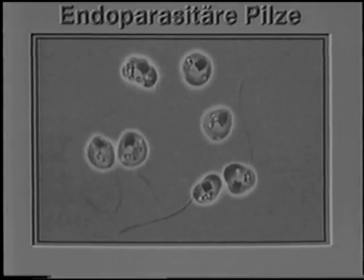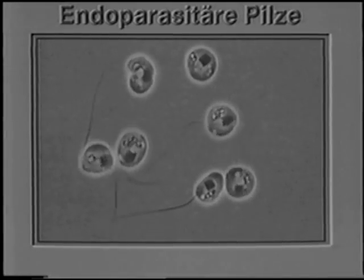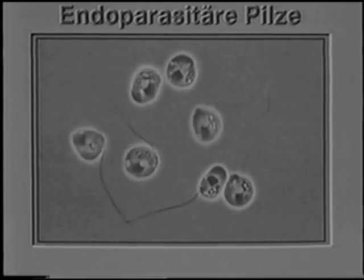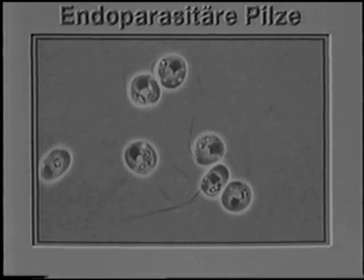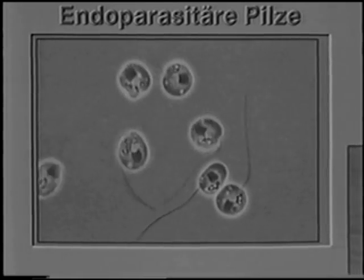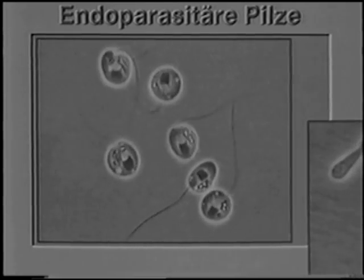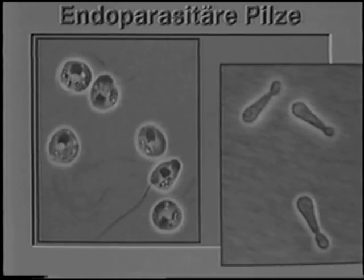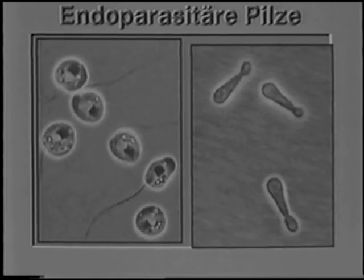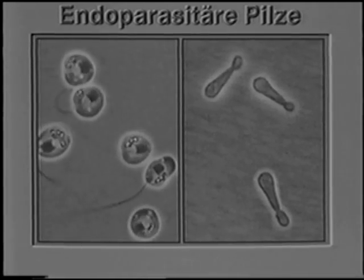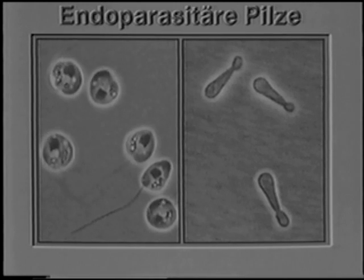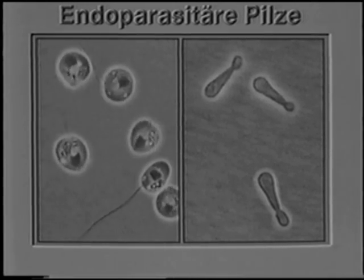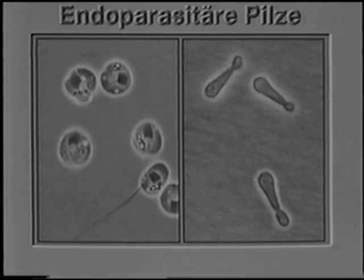The nematophagous fungi capture nematodes either with special mycelial structures or with their spores as in the endoparasitic fungi. Some fungi attack nematodes with motile zoospores. Others infect their hosts with adhesive conidia. Endoparasitic fungi often live as obligate parasites in the soil.